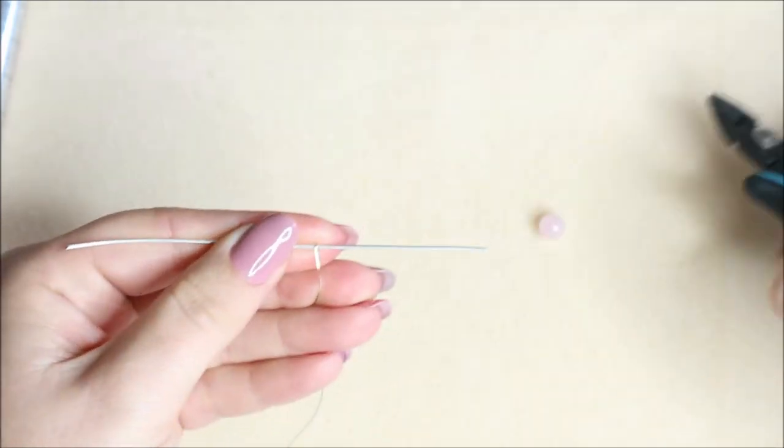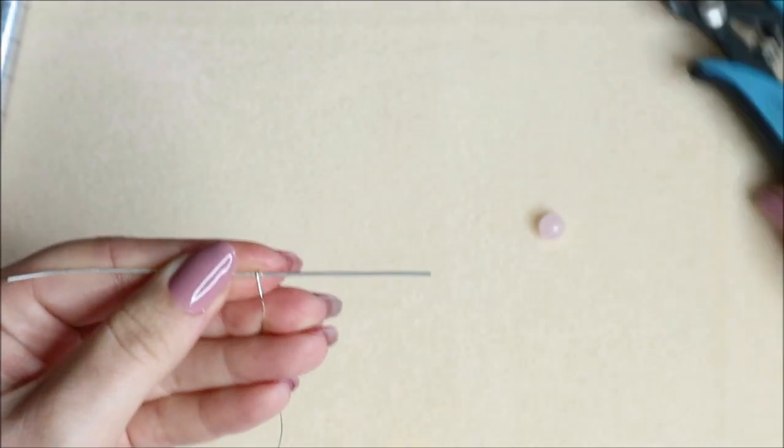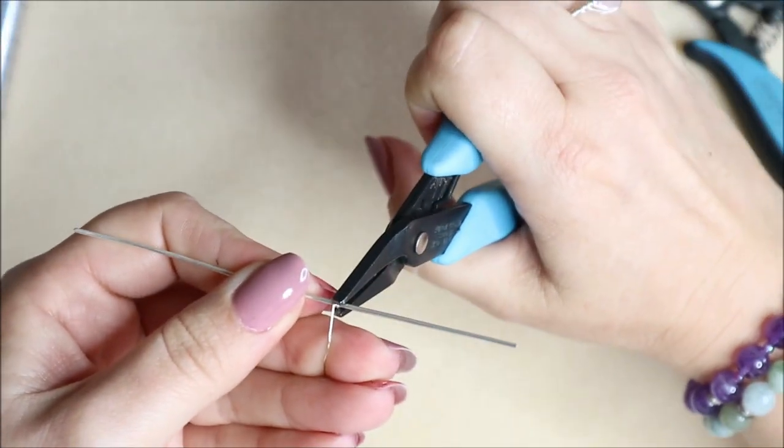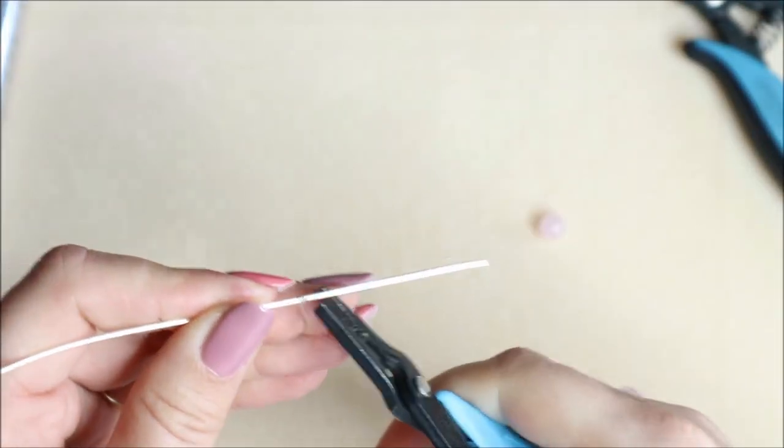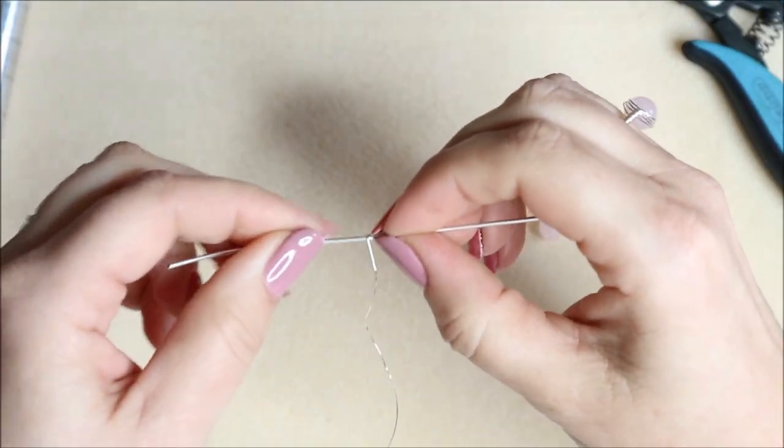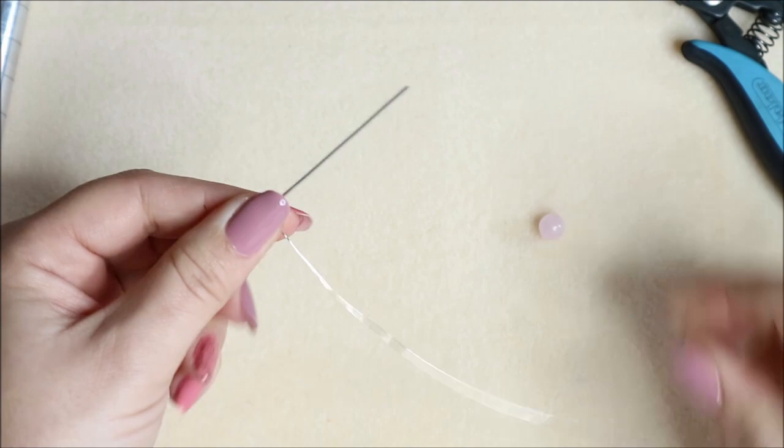It's not often in wire work we cut off the tail as one of the first things, but on this one we just need it out of the way. Just make sure you give that a little pat down with your pliers, a little squish, just to make sure there's no ends sticking out.